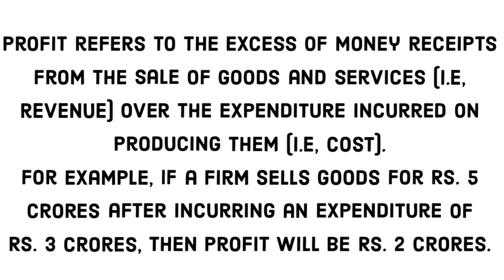First is profit. Profit refers to the excess of money receipts from the sale of goods and services — that is called revenue — over the expenditure incurred on producing them, which is cost. So profit equals revenue minus cost. If it is any positive value, there is profit. For example, a firm sells goods at 5 rupees.